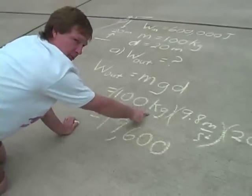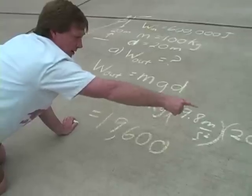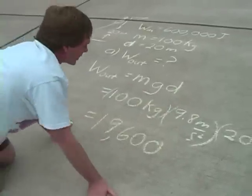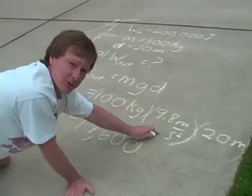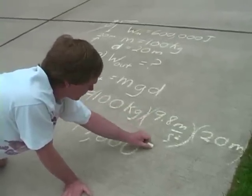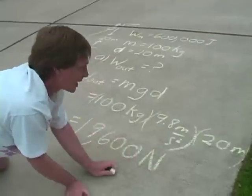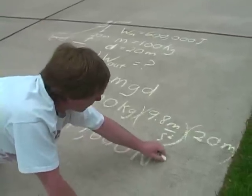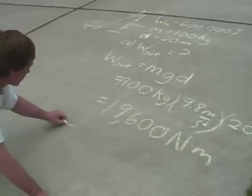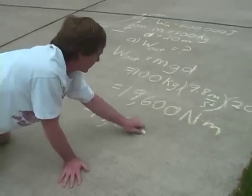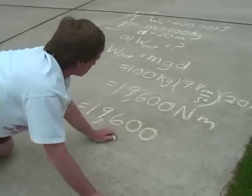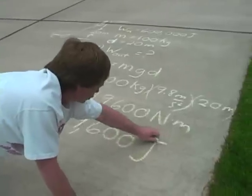And I have kilograms times meters per second squared times meters. Now, that's mass and that's acceleration. Kilogram meter per second squared, that's a newton. And meters, multiply by meters, I got a newton meter. That's the same as 19,600 joules.